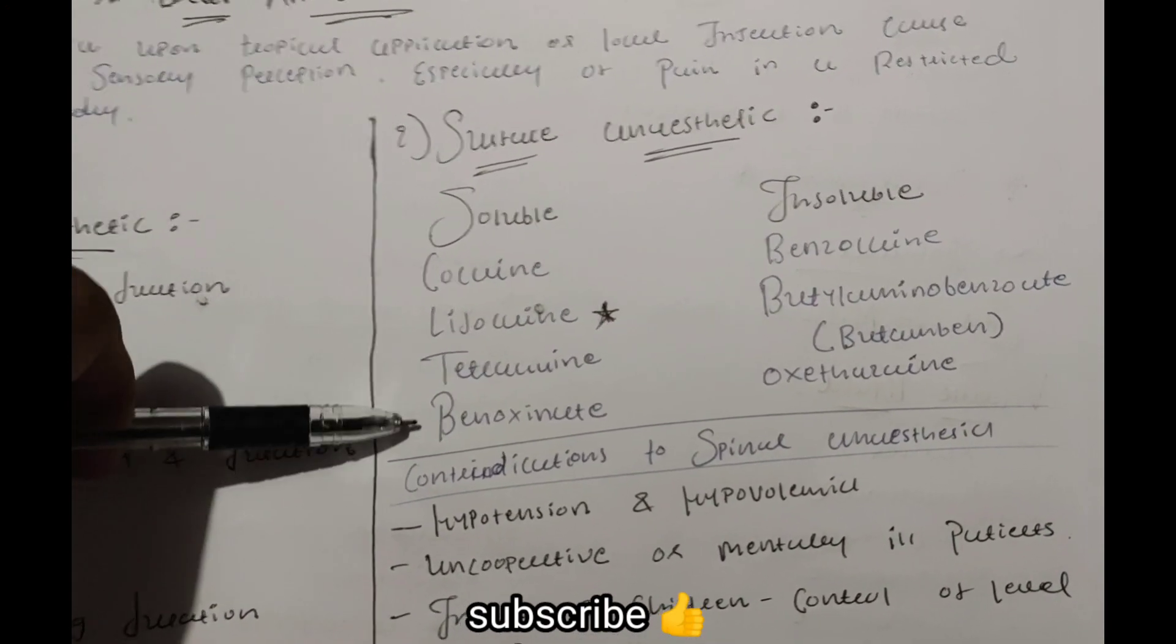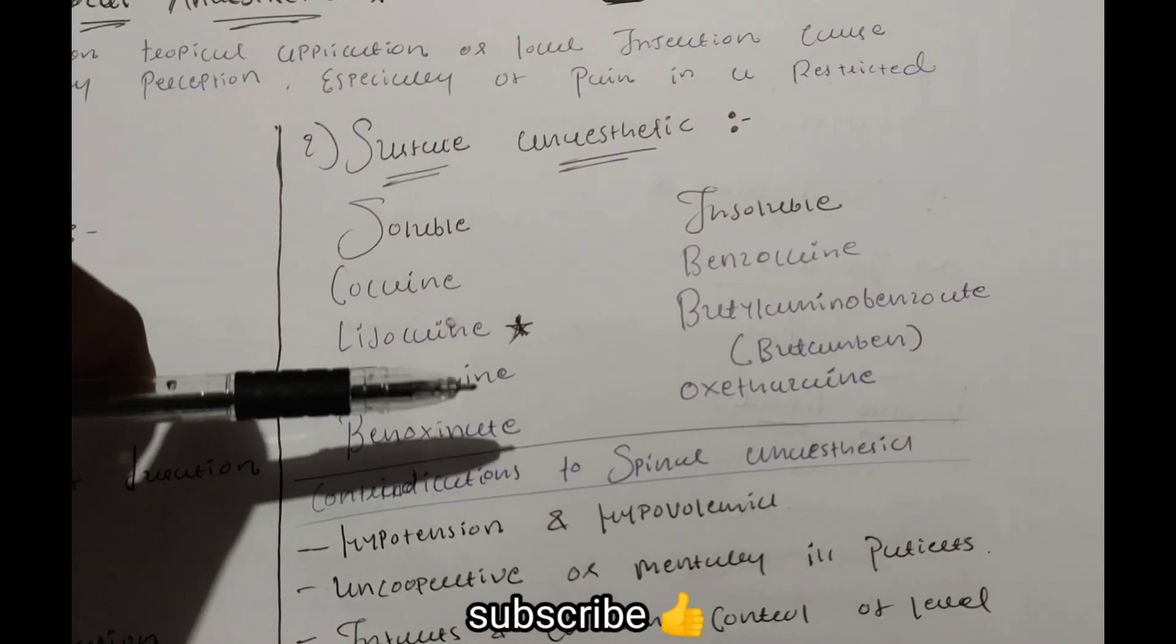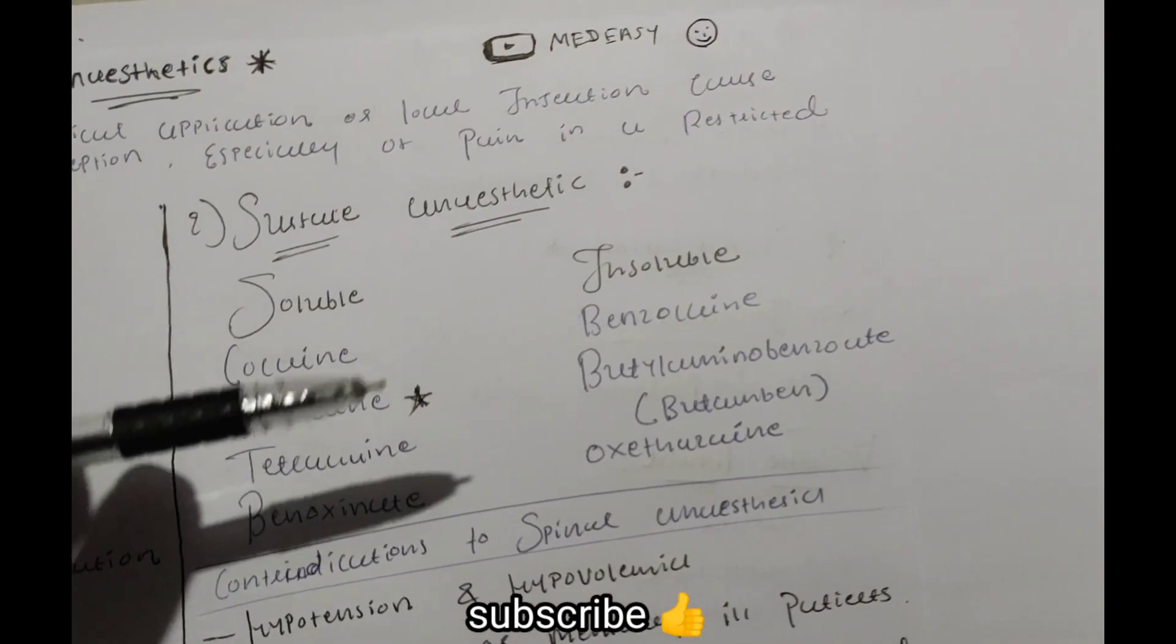Then this is benzocaine. These are the insoluble types: benzocaine, butaben, and oxethazaine.